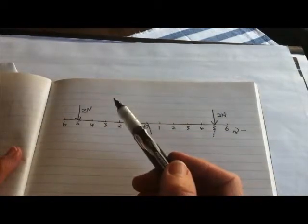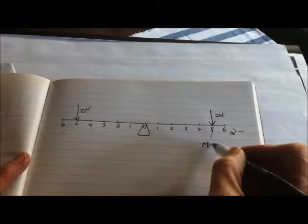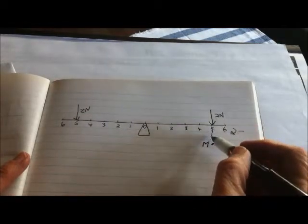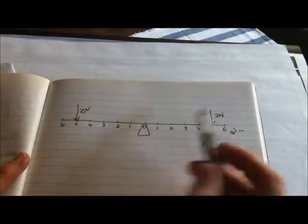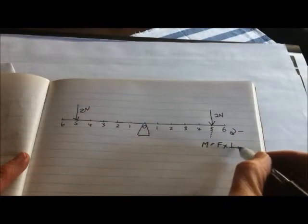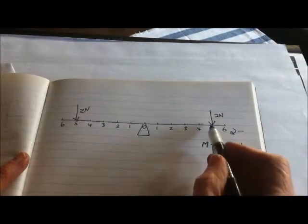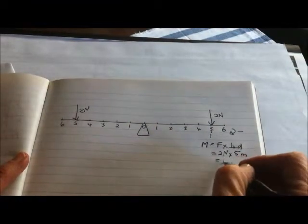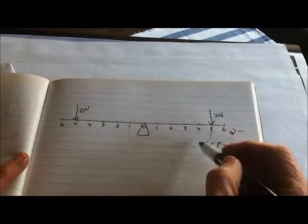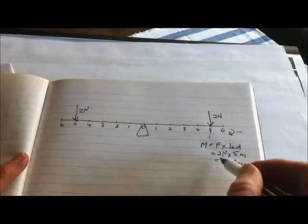The moment here due to this person is their weight acting down through that line of action times the perpendicular distance from that line of action back to the fulcrum. That's force times perpendicular distance, which equals two Newtons down times five meters — that's 10 Newton meters. And because it's in the counterclockwise direction, or the 'tightening the lid on a jar' direction, it's negative.